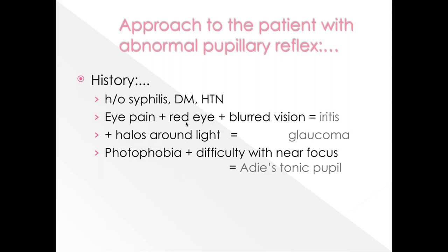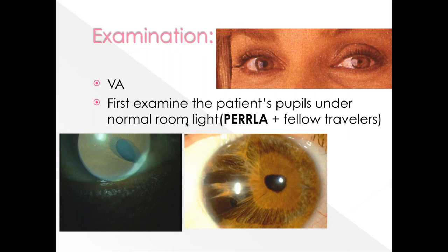Additional history includes headache, weight loss, appetite loss, and hoarseness of voice — all symptoms of underlying neoplasia causing Horner's syndrome. History of syphilis, diabetes, or hypertension with a tonic pupil should prompt consideration of light-near dissociation. Eye pain, redness, and blurred vision with cells and flare in the anterior chamber points to iritis; with a stony hard eyeball, glaucoma must be ruled out. A normal white eye with photophobia and difficulty with near focus suggests Adie tonic pupil.